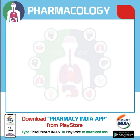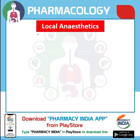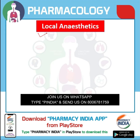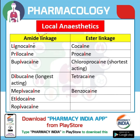Hello students, welcome. In today's video we are going to learn about local anaesthetics — specifically the types of local anaesthetics based on their linkage. We have two types: the first one is amide linkage and the second one is ester linkage. How to remember them and what kind of question will come — the question is: which is the amide linkage local anaesthetic or which is the ester linkage local anaesthetic?